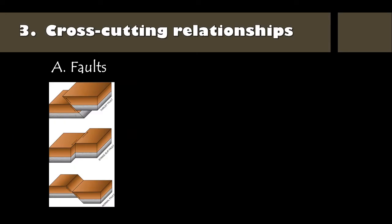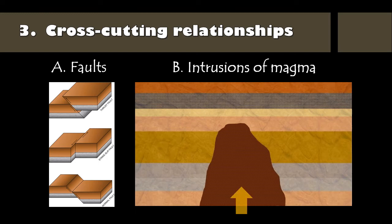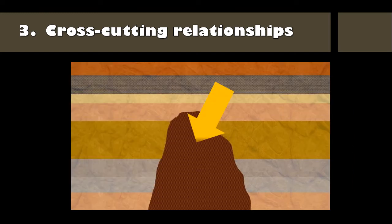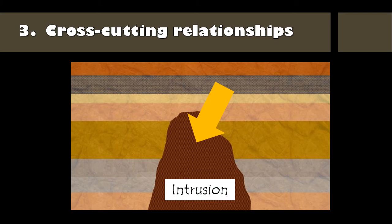Besides earthquake faults that cut through rock layers, magma from deep inside the earth can push up through cracks in the rocks. The magma that pushes through the cracks in the pre-existing rock layers to become rock itself is called an intrusion. The original rock layers are older, while the intrusion is younger or more recent.